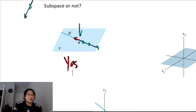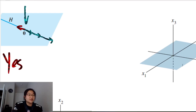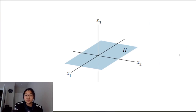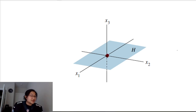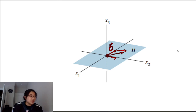How about this next H — subspace or not? Yes, this is a subspace. It contains the zero vector, it is closed under vector addition (the result stays in H), and it is closed under scalar multiplication — scaling in any direction keeps the vector in H.